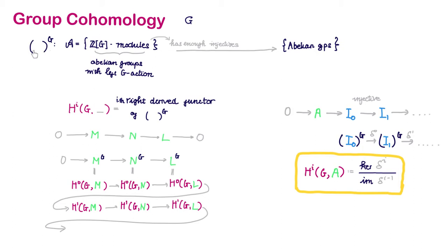Now taking the G invariant submodule of each such G module is a functor from this category to the category of abelian groups. So we can define the i-th cohomology functor of G to be the i-th right-derived functor of this left exact functor.